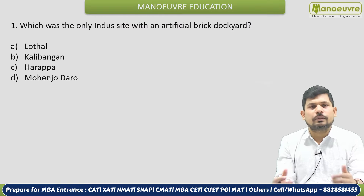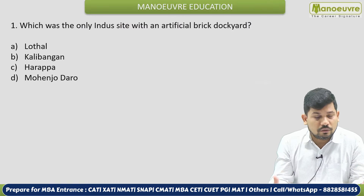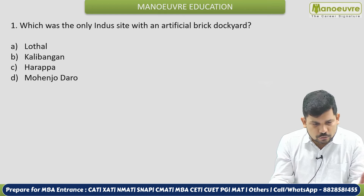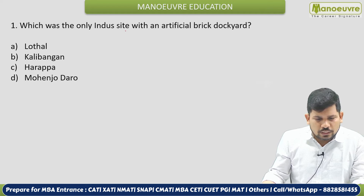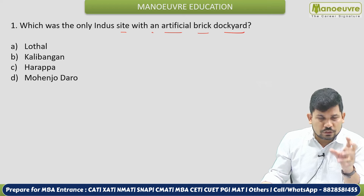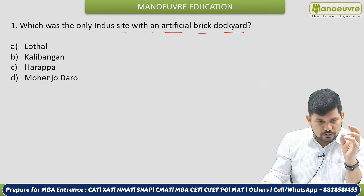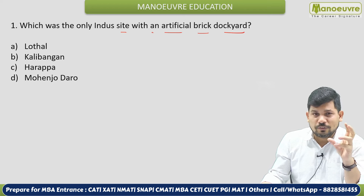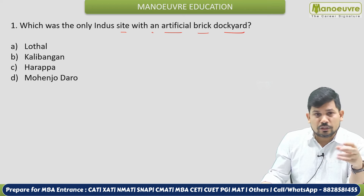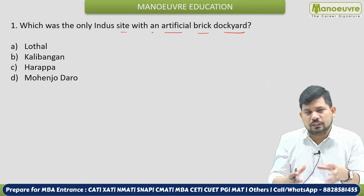Now let's move to the question part. We will discuss the top 50 questions from History and Polity based on the exam trend. See the first question: Which was the only Indus Valley site with an artificial bricks dockyard? From the Indus Valley Civilization, quite good questions come — Indus River, Harappa, Mohenjo-daro, archaeological findings — you need to practice all these types of questions.